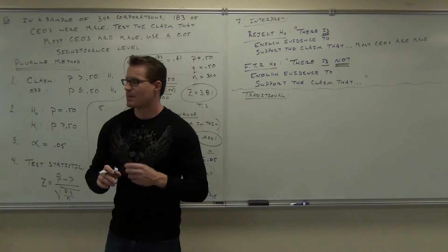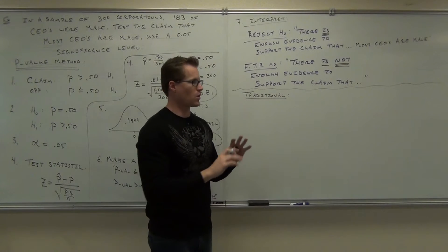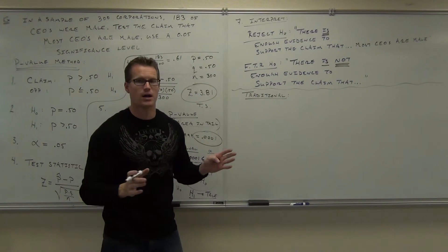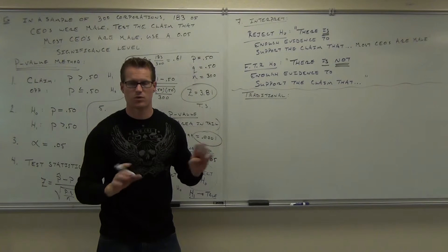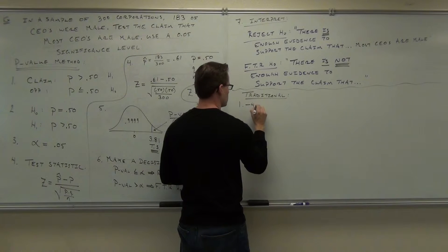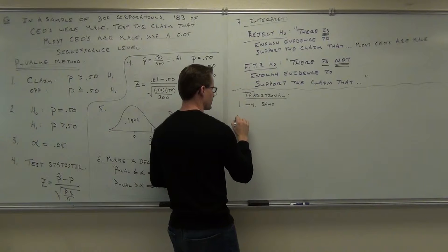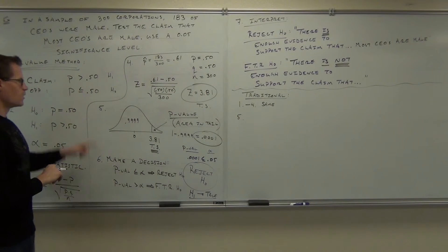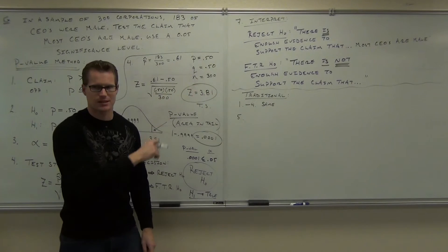Traditional method — steps one, two, three, and four are identical, so I'm only going to start at step number five. One through four are the same in either case. You still have a test statistic.